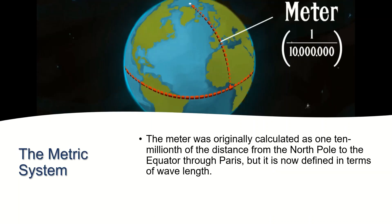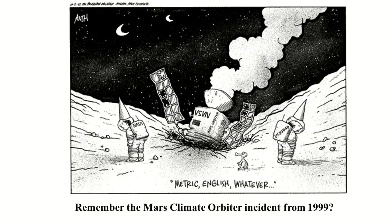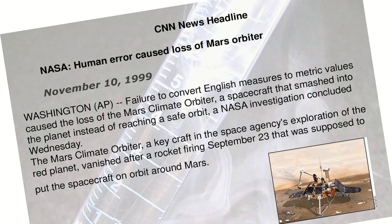The meter was originally calculated as 1/10 millionth of the distance from the North Pole to the equator through Paris, but it is now defined in terms of wavelength. Countries shown in blue use the metric system, while those in red use the imperial or British system. Only three countries — Myanmar, Liberia, and the United States — follow the English system. In 1999, NASA lost a Mars orbiter costing $125 million because an engineering team used English units while the agency's navigation team used the metric system, demonstrating the importance of a unified system of measurement.